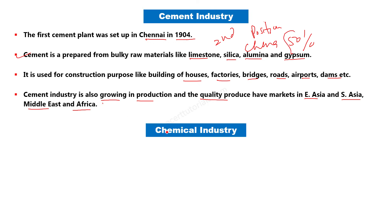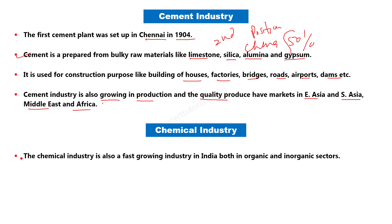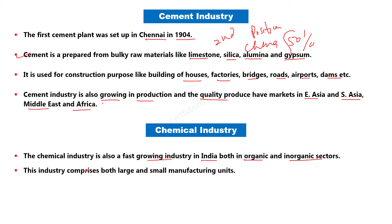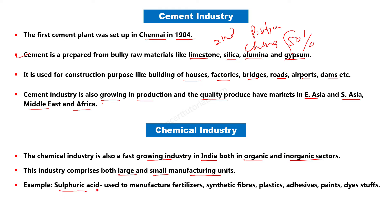اس کے بعد chemical industry ہے جو India میں fast growing industry ہے۔ اس میں large scale industries شامل ہیں۔ Chemicals کا استعمال fertilizers، synthetic fibers، plastics، adhesive، paints اور dyes وغیرہ میں ہوتا ہے۔